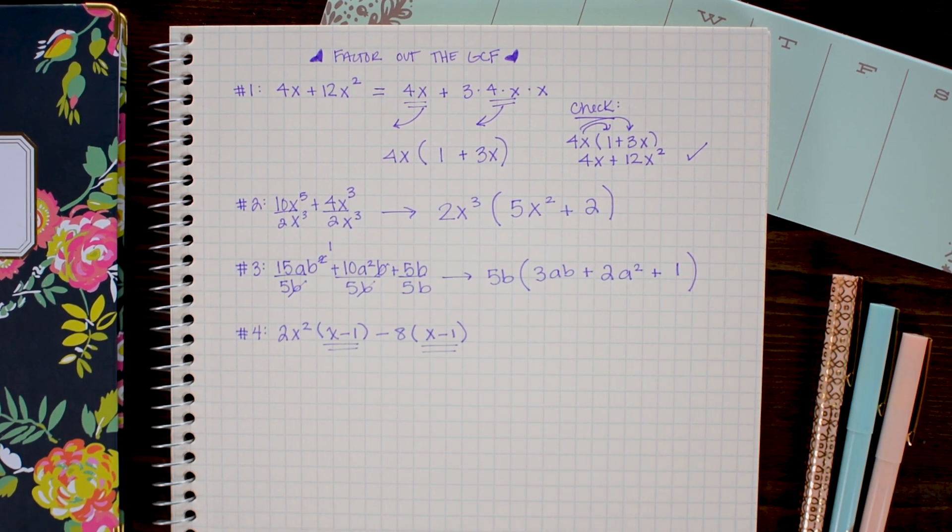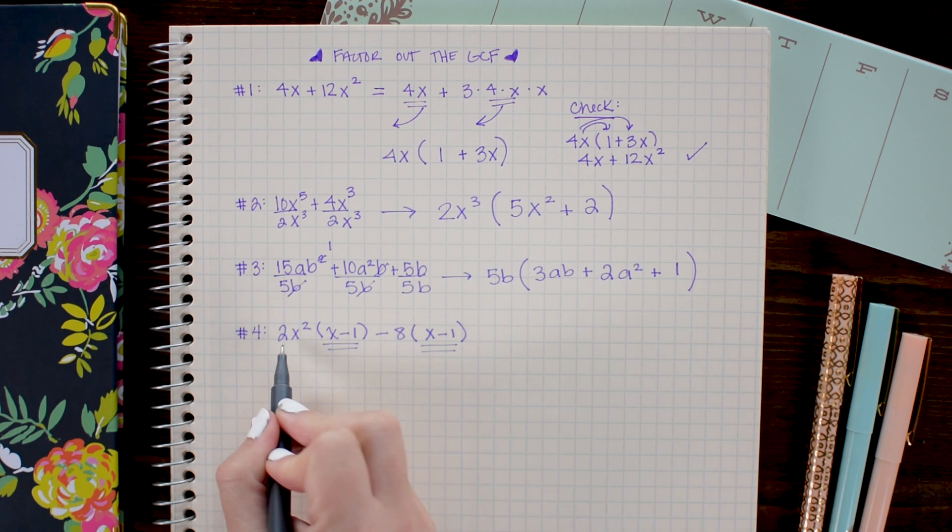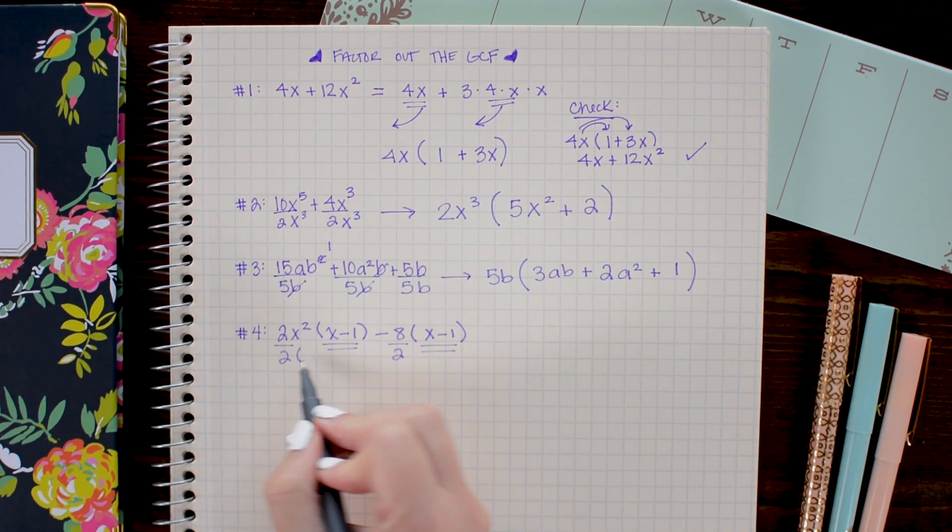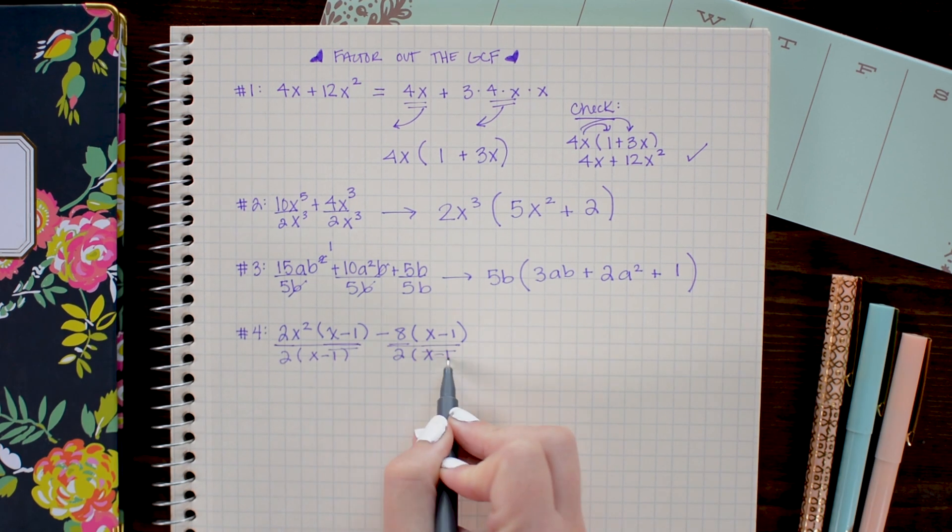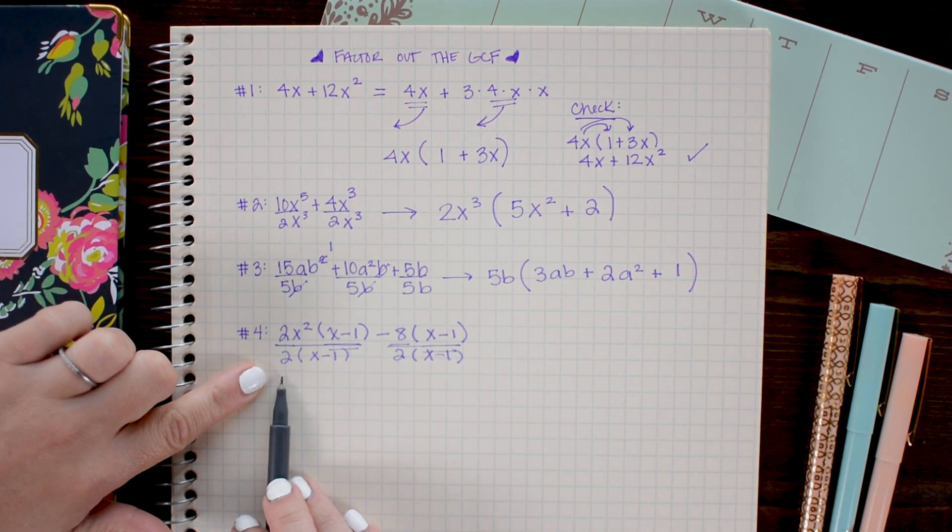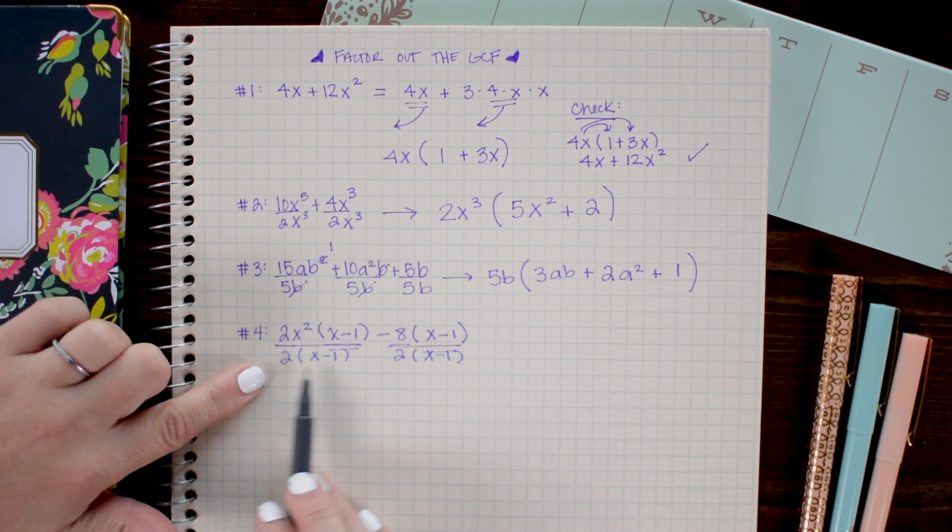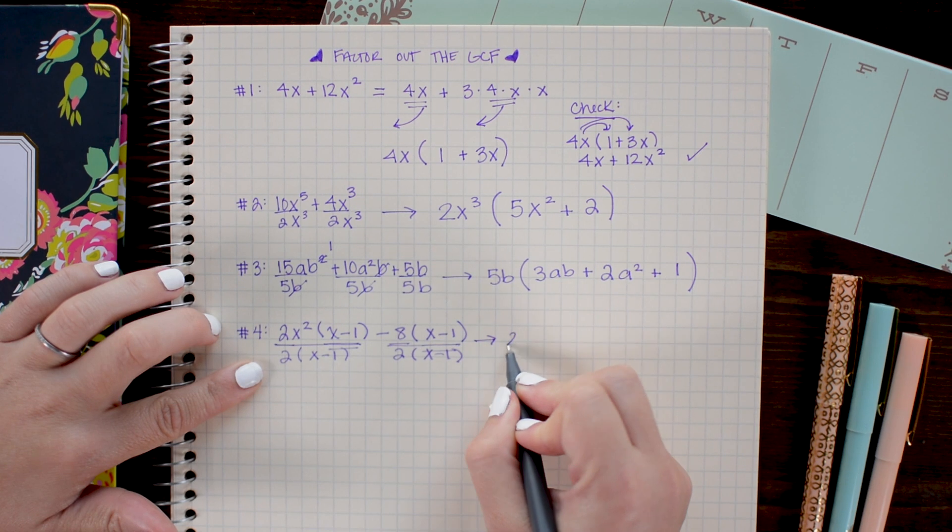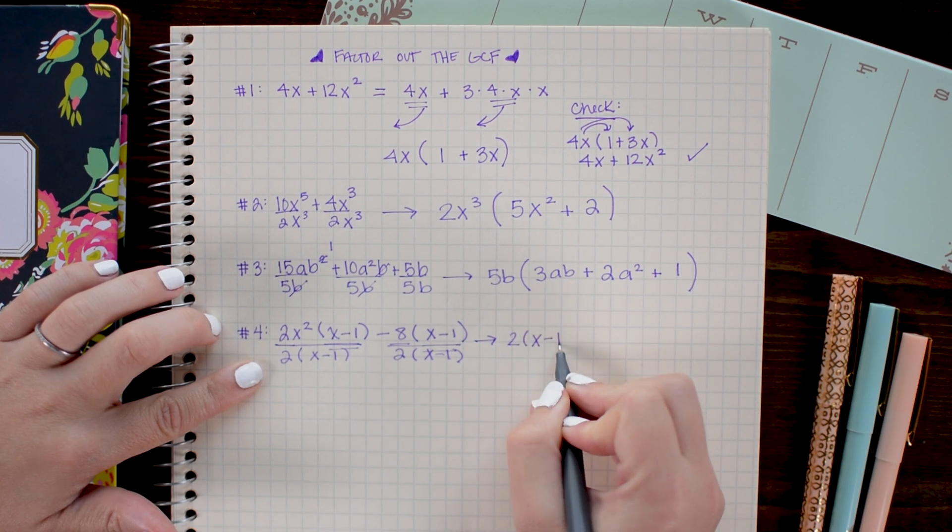So x minus 1 is going to be pulled out or divided out. Furthermore, I have even coefficients on both of these. So I could divide both of these by 2. That means that my greatest common factor and the factor I'm going to be dividing by is 2 times x minus 1. So to get started here I'm going to write 2 times x minus 1.